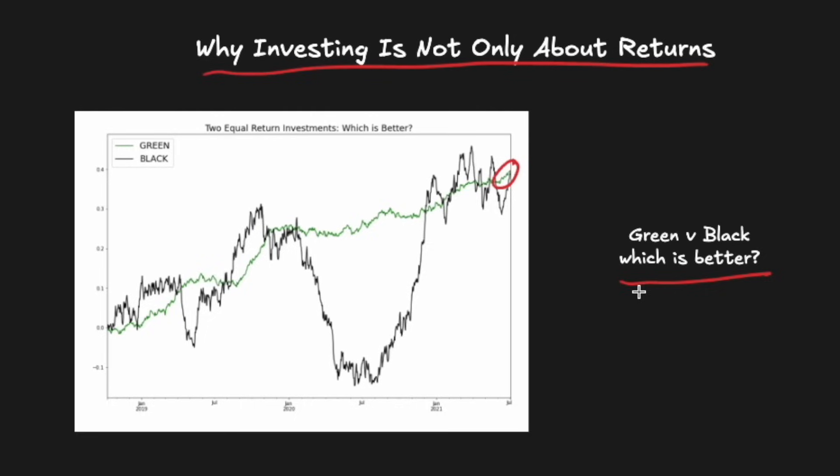To answer this, we can't just look at percent returns because they're the same between the two, so we have to look at something that's different. One thing that's different is the path that each took to reach that 40%. If you look at green, the path is pretty steady. In comparison, black wiggles around and moves around a lot more, and in particular has this steep up and down right in the middle.